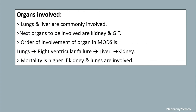Organs involved: lungs and liver are commonly involved, and the next organs to be involved are kidney and GIT. The order of organ failure typically starts with the lungs, leading to right ventricular failure, then progresses to the liver and kidney. Mortality is higher if the kidney and lungs are involved.